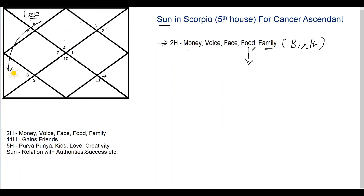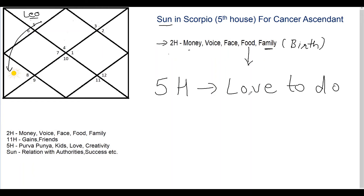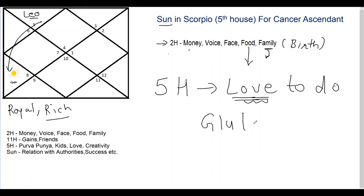The fifth house is also the house of things you would love to do — things you have a natural flair for. When Sun is in the fifth house as lord of the second, one thing you can say is that people with this placement would love to eat nice and rich food. Sun represents anything royal or rich, so they would have a special liking towards rich food and would be devoted towards their family as well.